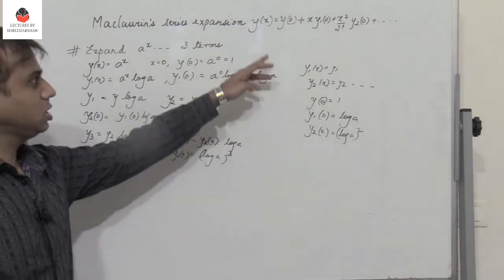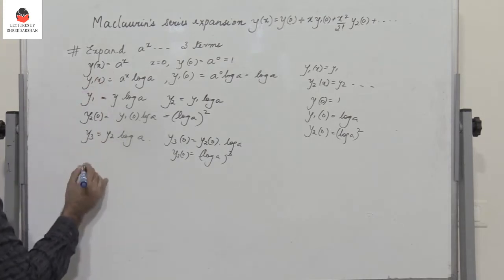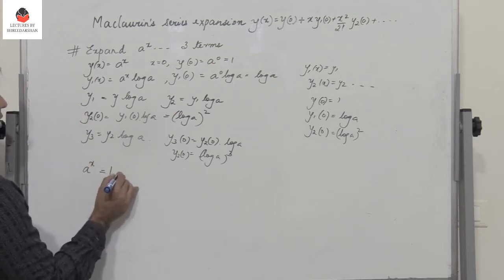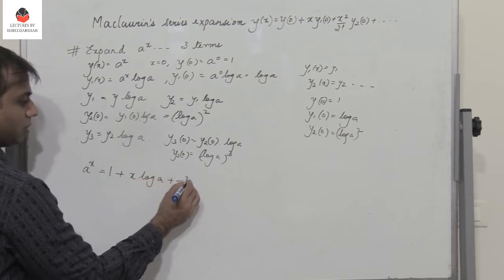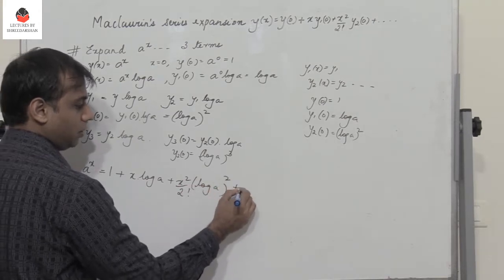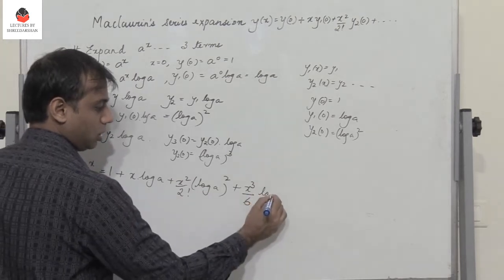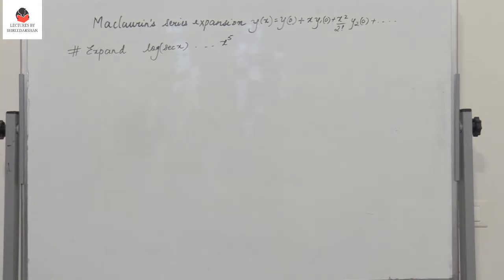Substituting all these values in the general Maclaurin expression: a^x = 1 + x · log a + (x²/2!) · (log a)² + (x³/3!) · (log a)³ + and so on.